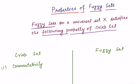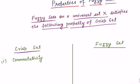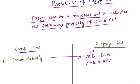Let us consider a fuzzy set on a universal set X. We are now discussing those properties which exist in crisp sets and which are also followed by fuzzy sets — that is, properties we can uplift from crisp to fuzzy. First is commutativity. Commutativity is present in crisp sets, and fuzzy sets are also commutative. That is, A union B is equal to B union A. Similarly, for intersection also, it commutes.